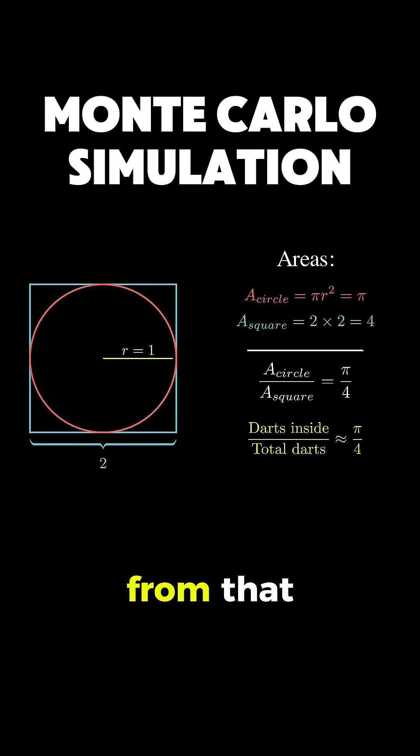And how can we approximate pi from that? Well, it's actually pretty simple. We look at the area of the circle and the square and we take their ratio, which in this case gives us pi divided by 4.